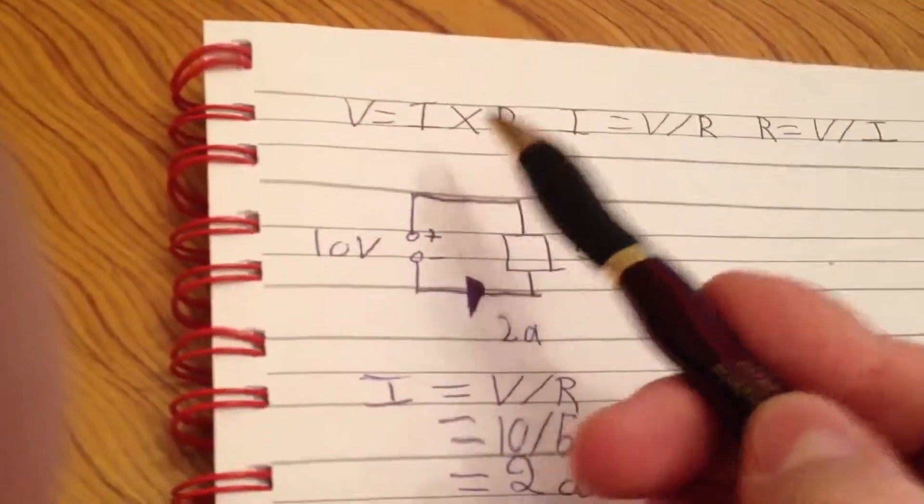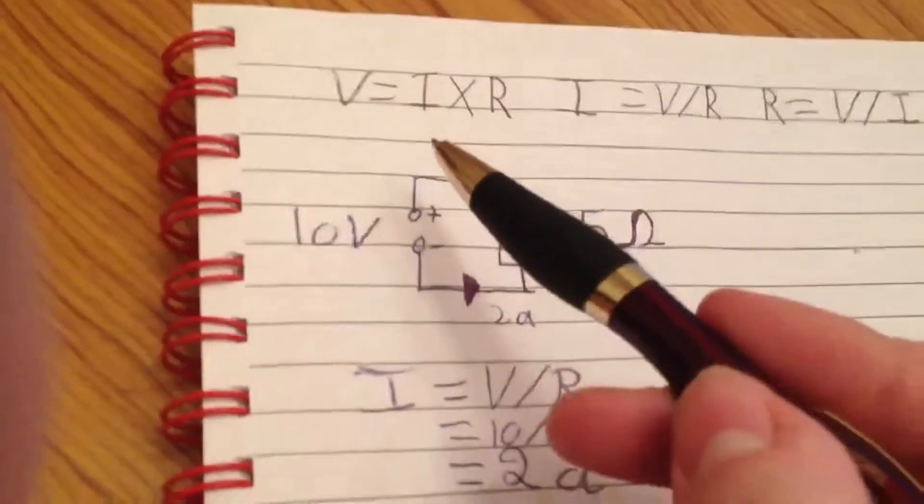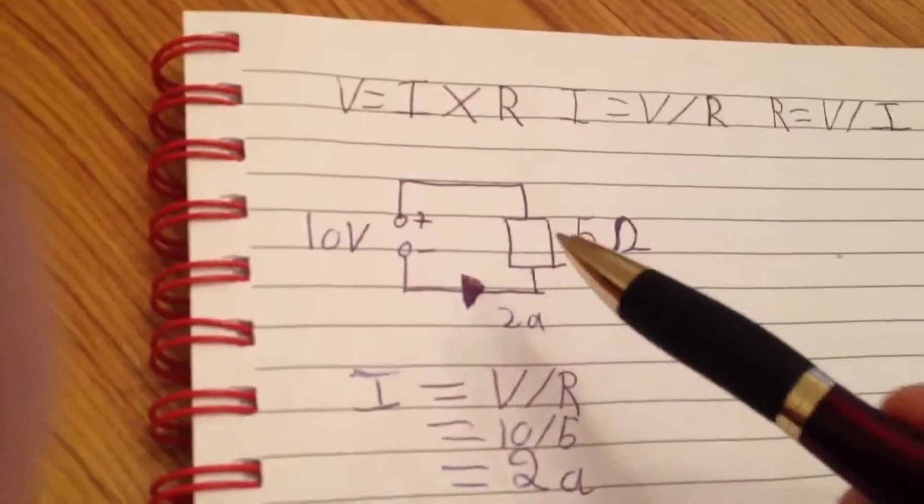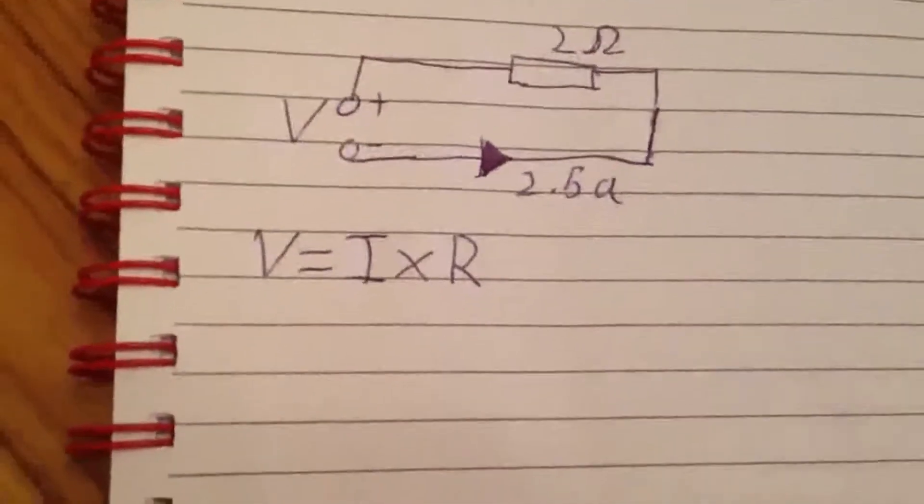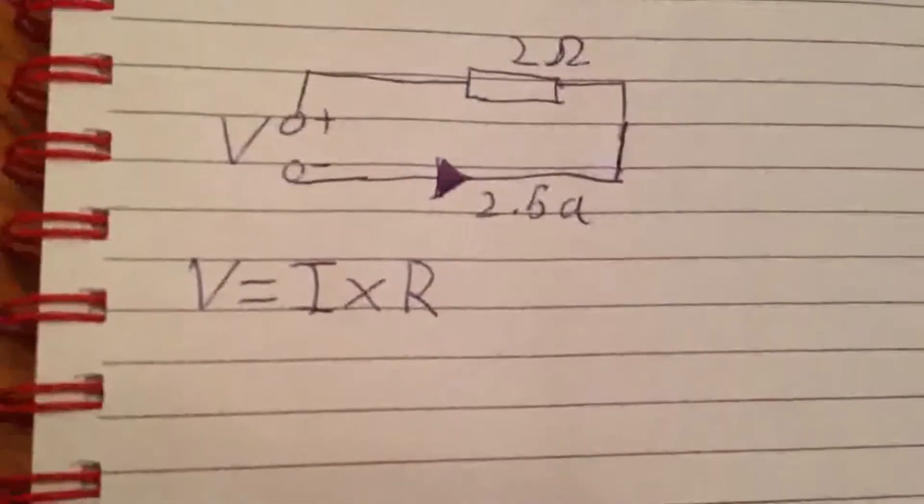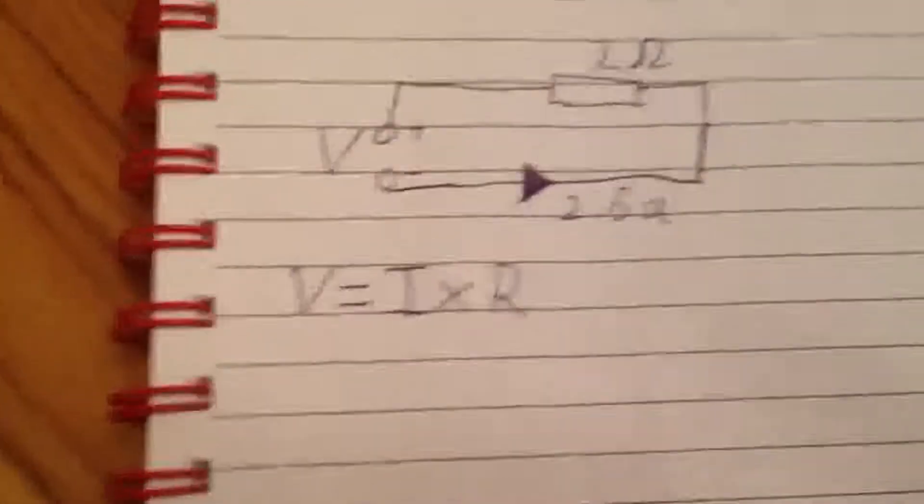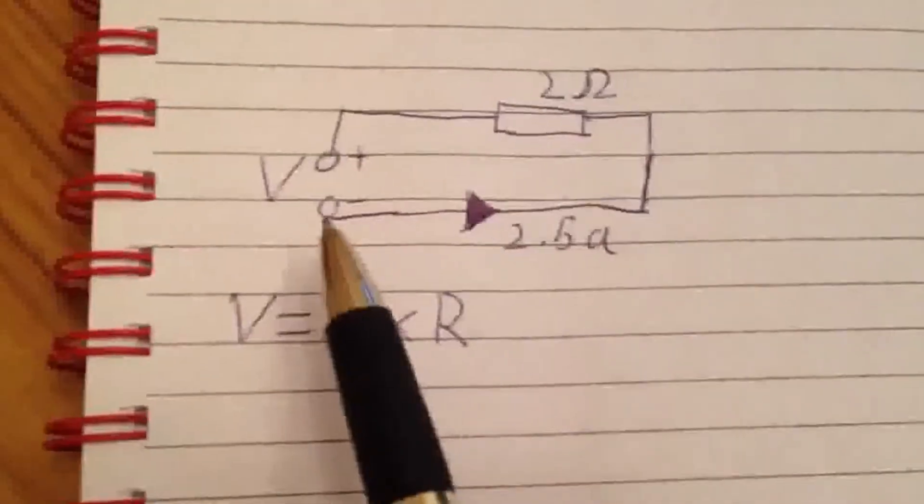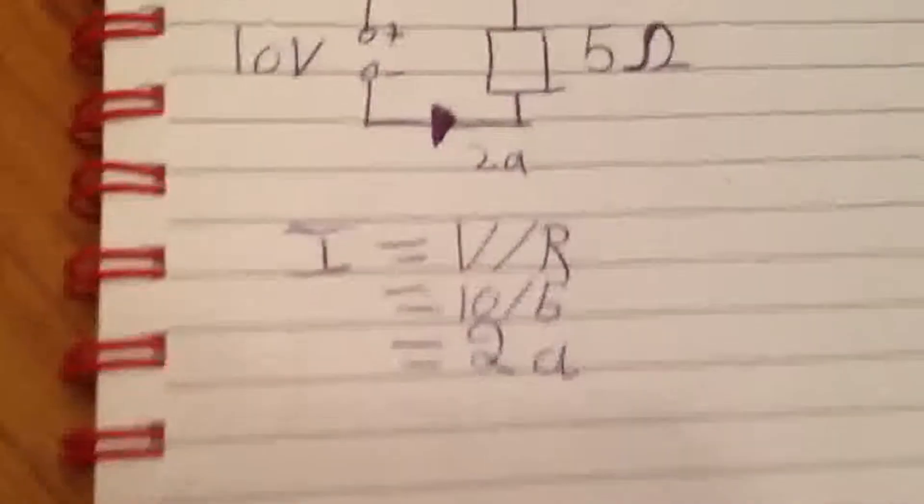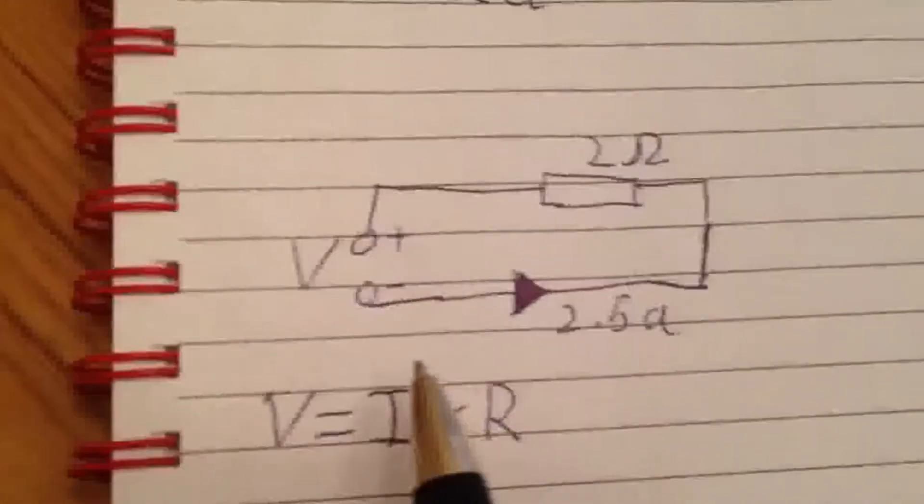For another one, we're now going to use this formula: voltage equals I times R. I'm now just going to draw up another circuit and put the current and the resistance in, but I'm not going to put in a voltage. We'll be back in a minute when I've drawn that up. Looks like this tutorial could be a two-part one.